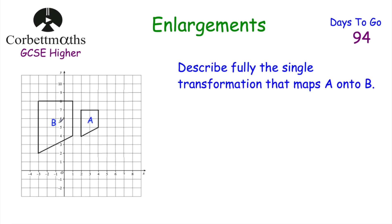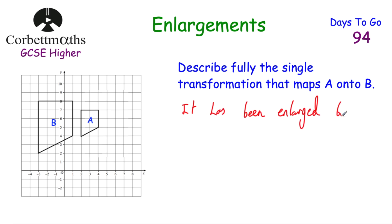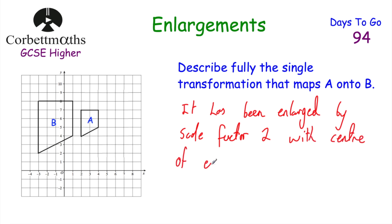Next question: we have two trapeziums on a grid — A and B, where B is bigger than A. We're asked to describe fully the single transformation that maps A onto B. The transformation is an enlargement. To find the scale factor, we look at the sides: the top of A is length 2 and the top of B is length 4, so it's been enlarged by scale factor 2. Now we need to find the centre of enlargement.